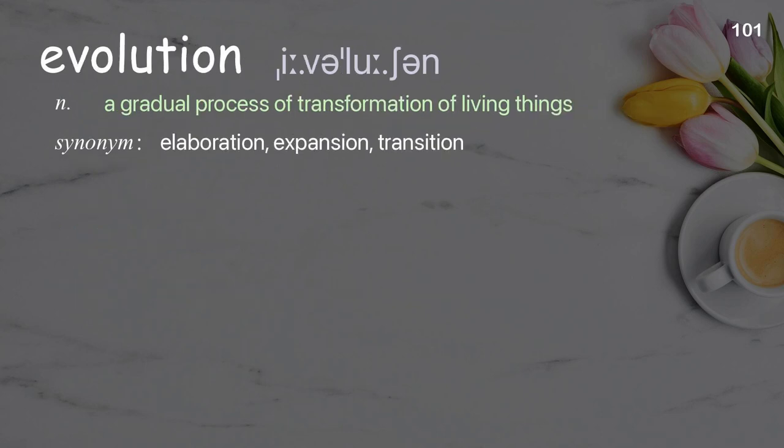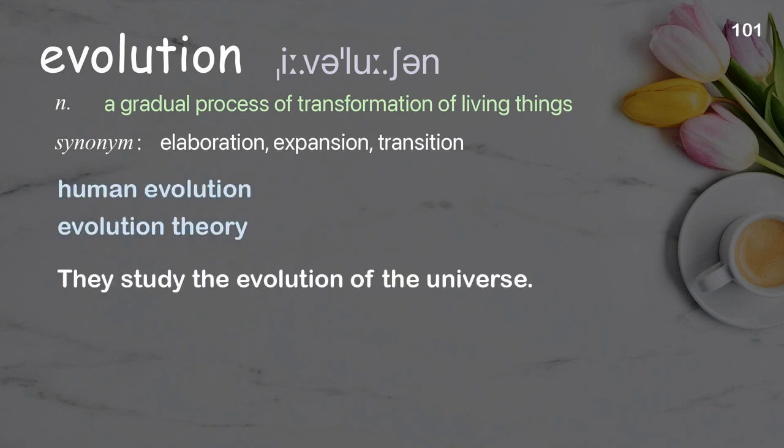Evolution: a gradual process of transformation of living things. Examples: human evolution; evolution theory. They study the evolution of the universe.